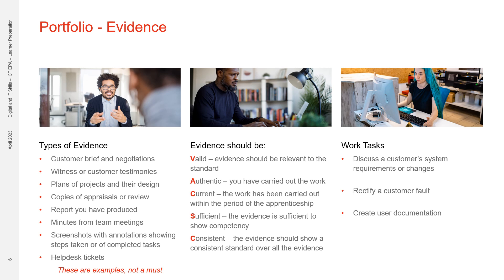The evidence you include should be valid, meaning it should be relevant to the standard you are completing. Authentic — it must be work that you have carried out. Current — the work has been carried out during your time in the apprenticeship. Sufficient — the evidence is sufficient to evidence your competency in the task you were evidencing. And finally consistent — meaning the evidence shows a consistent standard throughout. Work tasks you might include could be discussing customer system requirements or changes, rectifying a customer fault, or creating user documentation. Again these are just examples for reference.